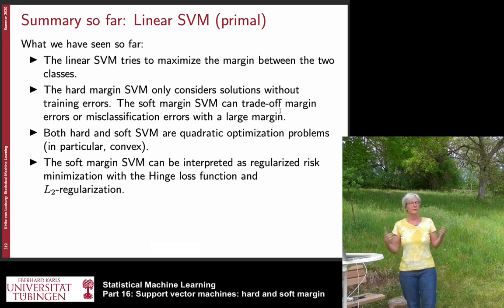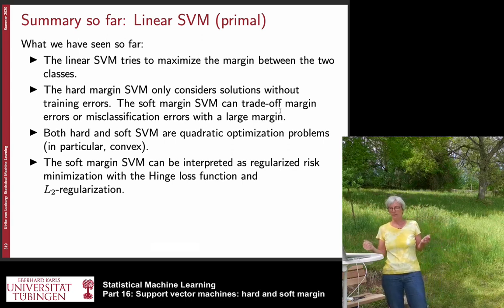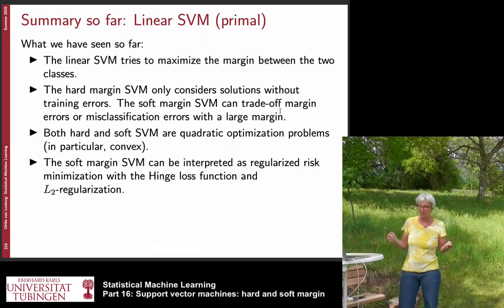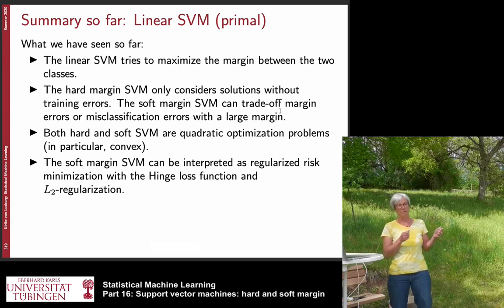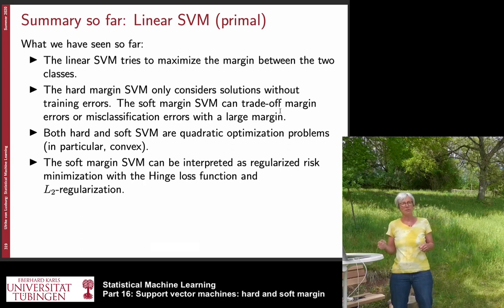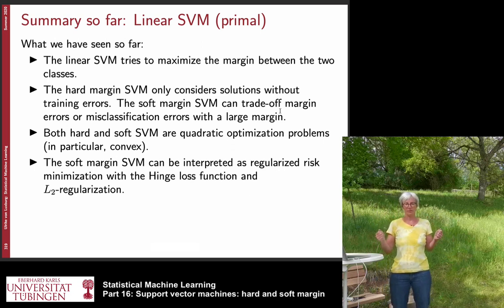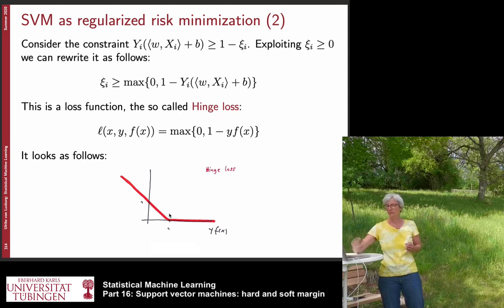To summarize: the linear SVM tries to maximize the margin between two classes. The hard margin SVM requires no training errors; the soft margin SVM allows errors with a trade-off controlled by C. Both lead to convex quadratic optimization problems with efficient solvers. The soft margin SVM has an interpretation as regularized risk minimization with the hinge loss — a loss that punishes points inside the margin and on the wrong side of the hyperplane, increasing linearly. This linear increase is called the hinge loss, named for its hinge-like shape.